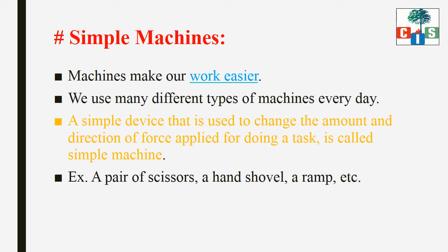So these objects or tools are nothing but machines. So what are machines? Machines are simple devices that are used to change the amount and direction of force applied for doing a task. These machines we use in our day-to-day life because they make our work easier. Can you imagine cutting a cloth without a pair of scissors? It becomes difficult if there are no scissors. So what is a simple machine? A simple device that is used to change the amount and direction of force applied for doing a task is called a simple machine. Examples include a pair of scissors, a hand shovel, and a ramp.